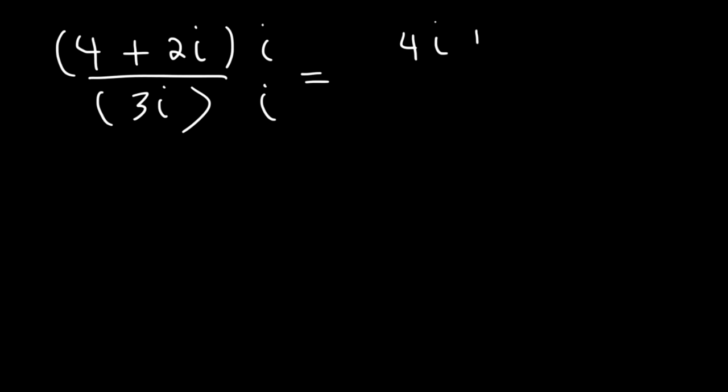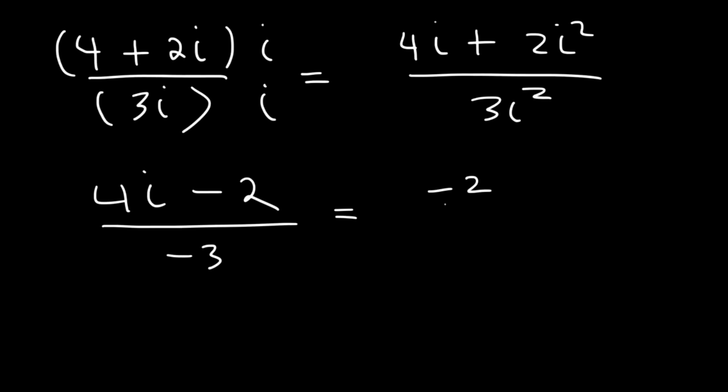So on top, it's going to be 4i plus 2i squared. On the bottom, we're going to have 3i squared. 2i squared is equal to negative 2. 3i squared is negative 3. So we're going to divide both numbers by negative 3. So negative 2 divided by negative 3 plus 4i divided by negative 3.